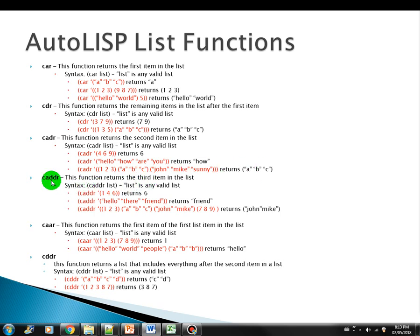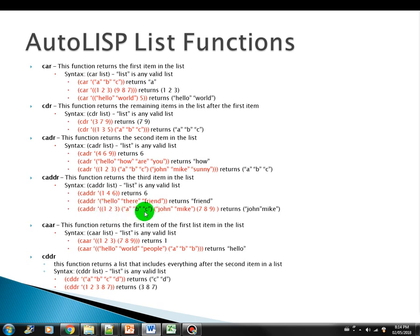The fourth function is CADDR. This function returns the third item in the list. So we have here a list of 1, 4, 6 and it gives us the third element. Another example is a list of strings — "you", "their", "friend" — and it gives us the third item in the list. Also, if you are manipulating a list of lists with 1-2-3, A-B-C, John, Mike, and 7-8-9, it returns the third item in our list.